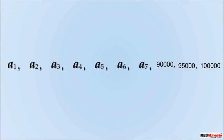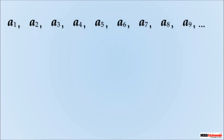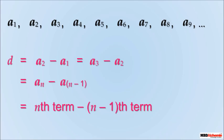If we denote the first term by A1, second term by A2, third term by A3, and so on, then the arithmetic progression will be A1, A2, A3, and so on. Here, the common difference D is equal to A2 minus A1 equal to A3 minus A2. If we say there are n terms in this AP, then D is equal to nth term minus n minus 1th term.